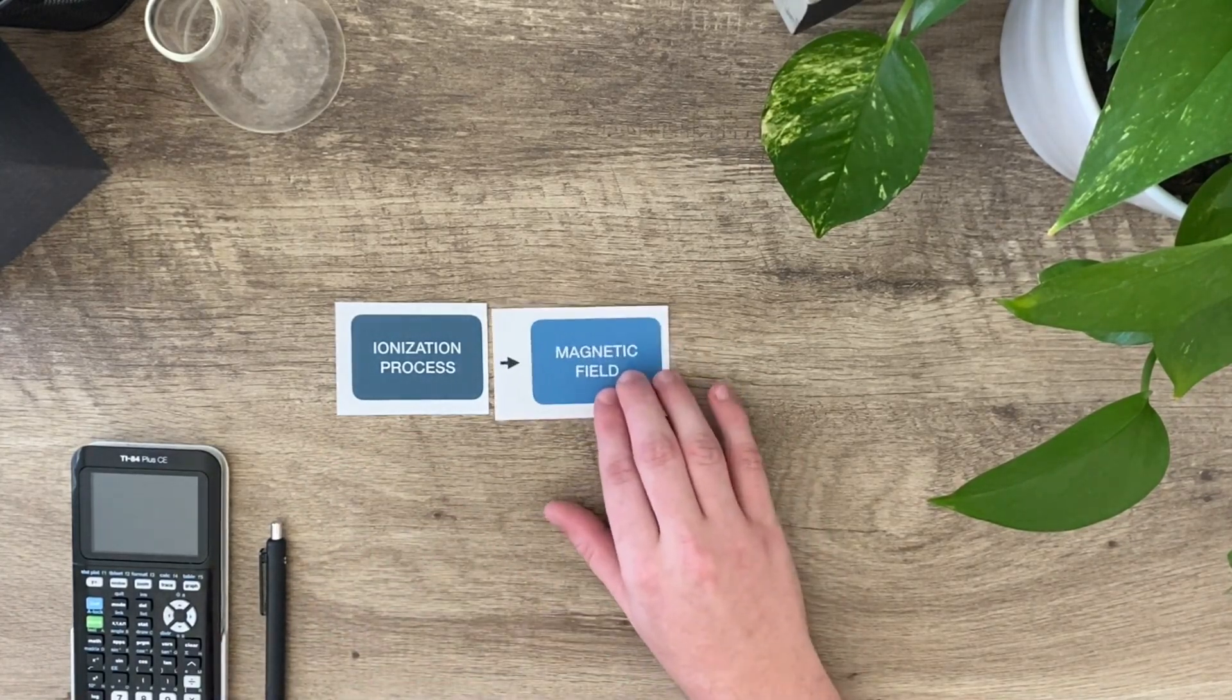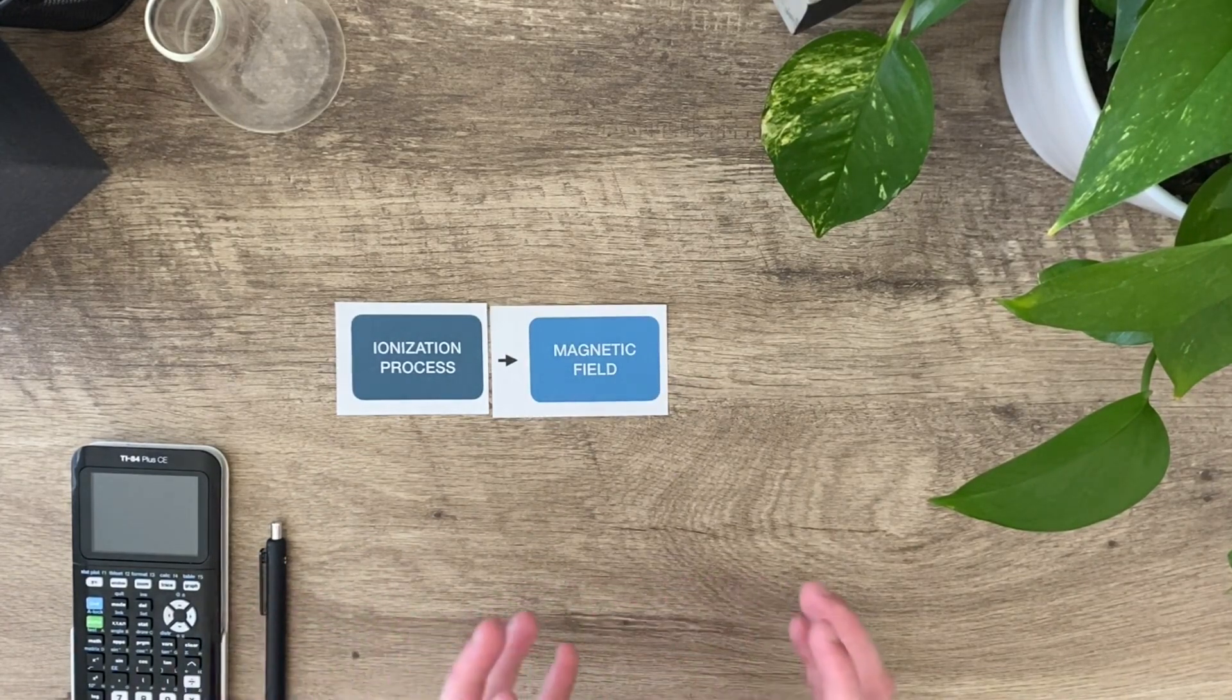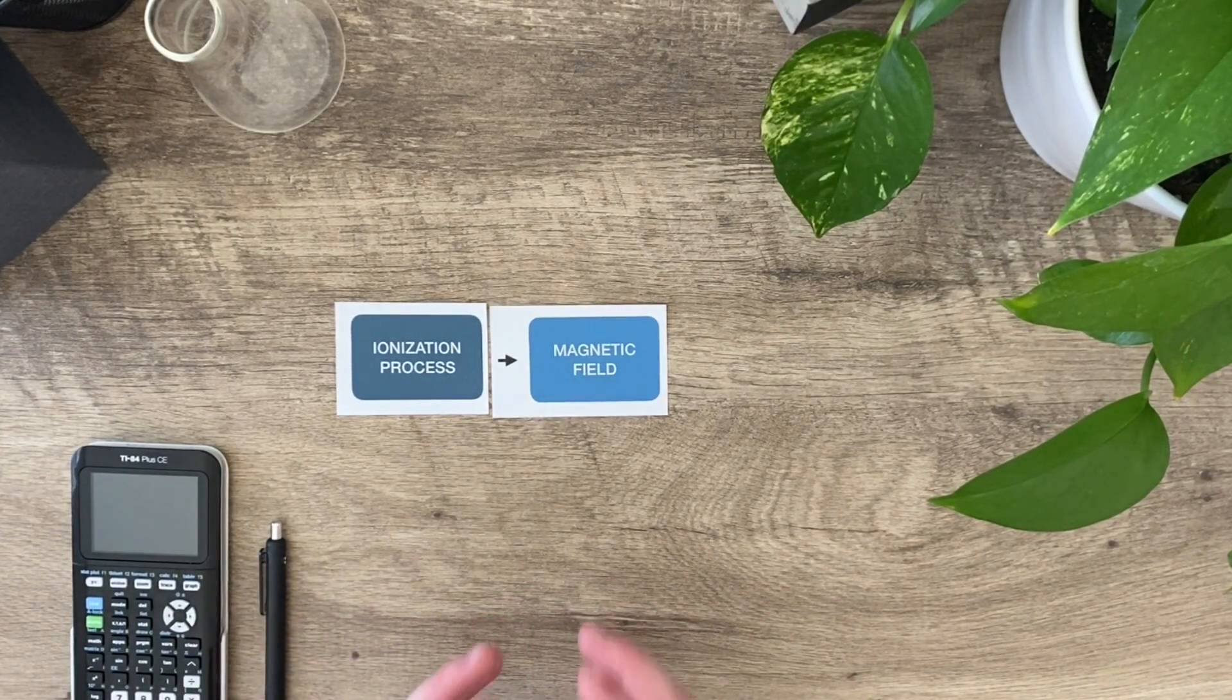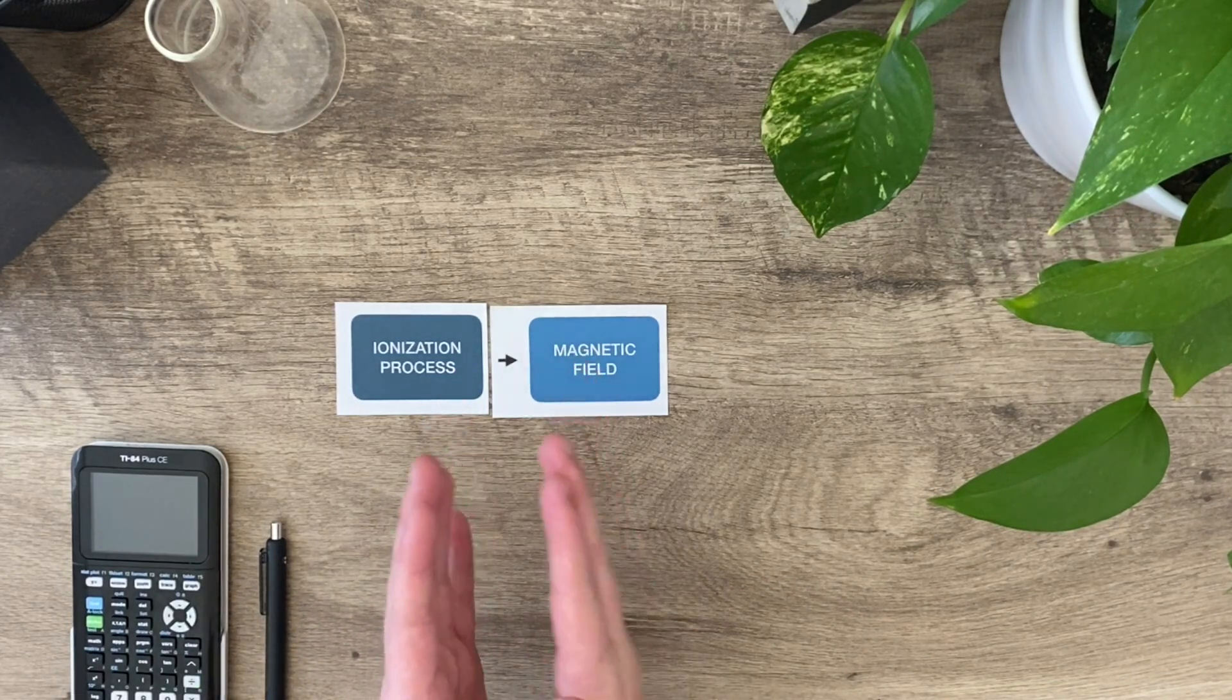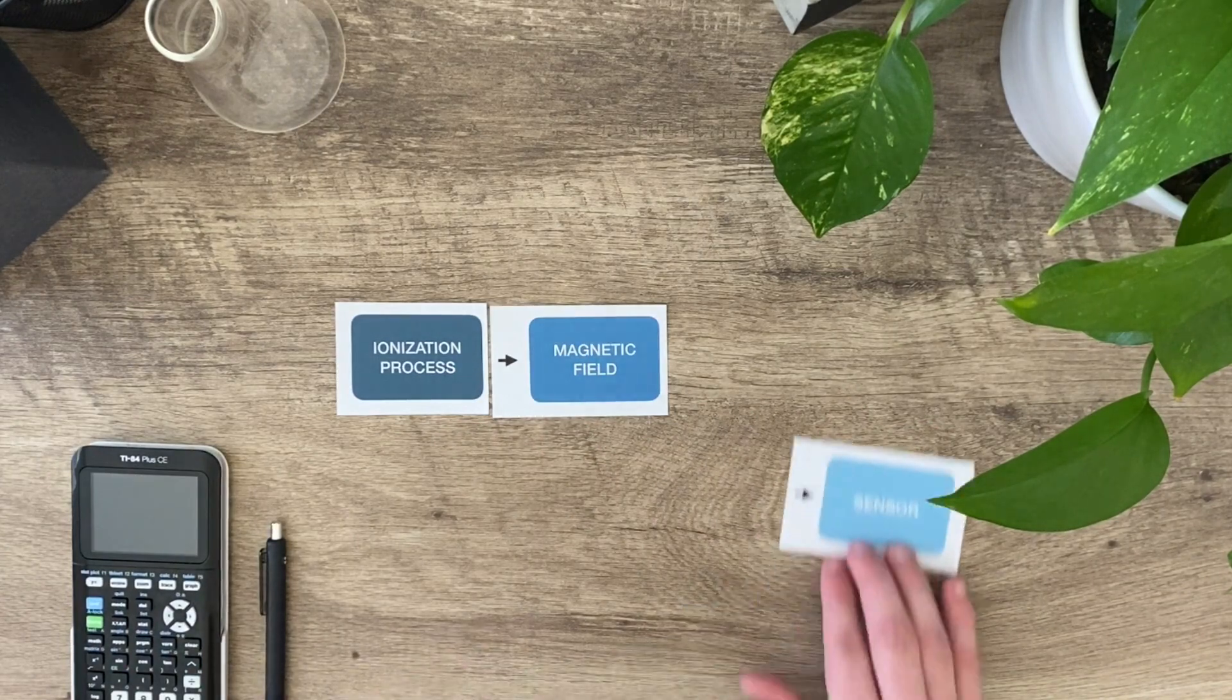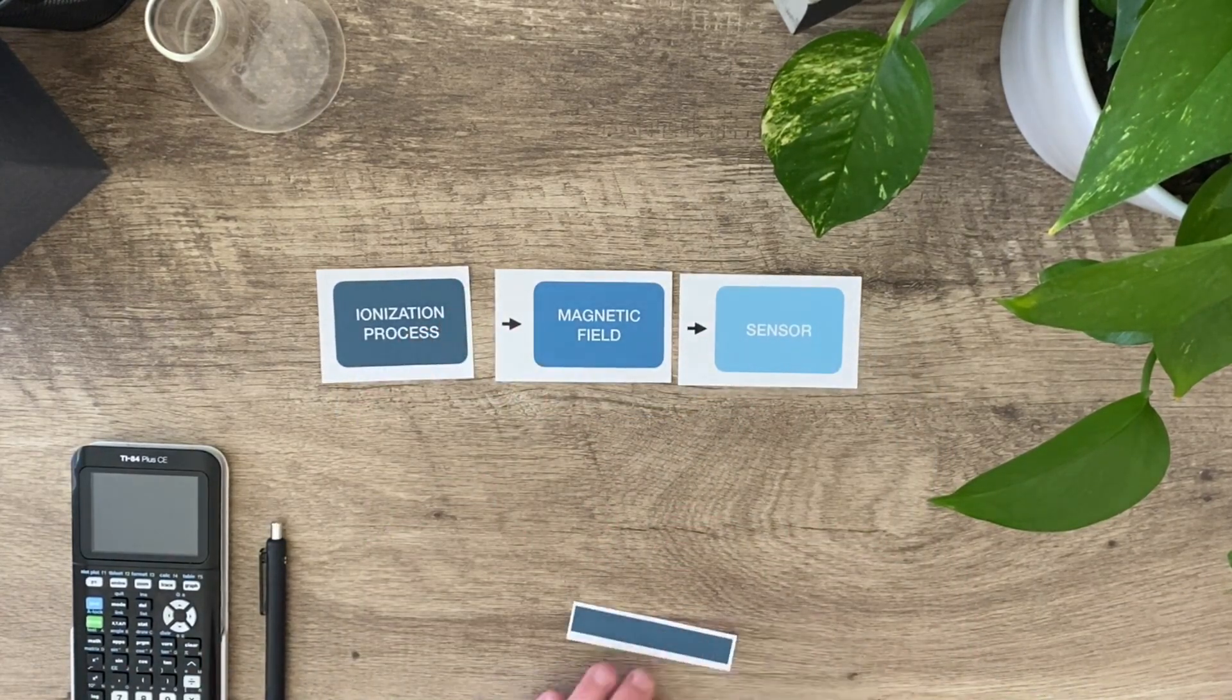The second part is that they're going to push those ions through a magnetic field, and the variation in that magnetic field causes the particles to sway left or right and deviate from the same path. Instead of all the molecules following the same path, they separate out and then they'll collide with a sensor.